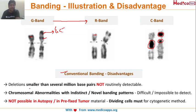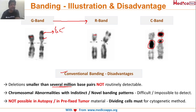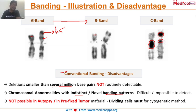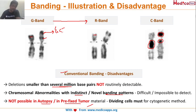The main disadvantage of conventional banding is that only very large deletions or translocations can be identified — deletions or translocations smaller than several million base pairs are not routinely detectable, so sensitivity is very low. Even specificity is low for chromosomal abnormalities with indistinct banding patterns. Another important limitation: banding cannot be done on autopsy or prefixed tumor material — dividing cells are a must for this method.